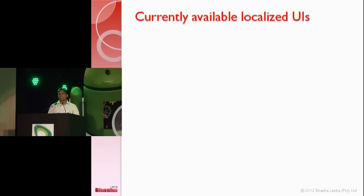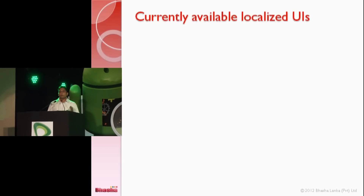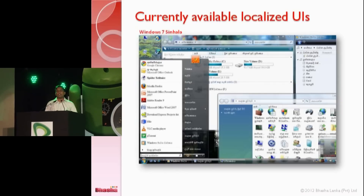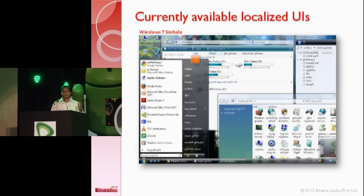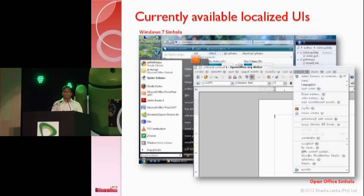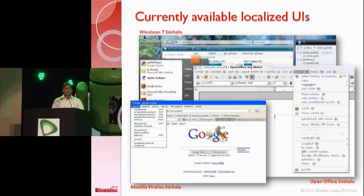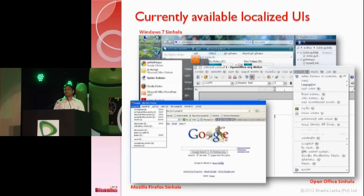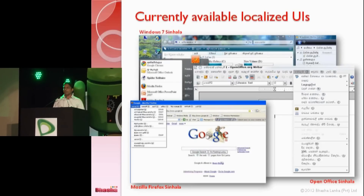These applications are not currently available in the UIs of mobile platforms, but in desktop — rather PC — platforms. This is Windows 7 Sinhala, and I hope most of you already know that the Windows 7 UI is completely available in Sinhala. Another one is OpenOffice Sinhala, and the other is Mozilla Firefox Sinhala. These are examples of applications available in localized UIs.